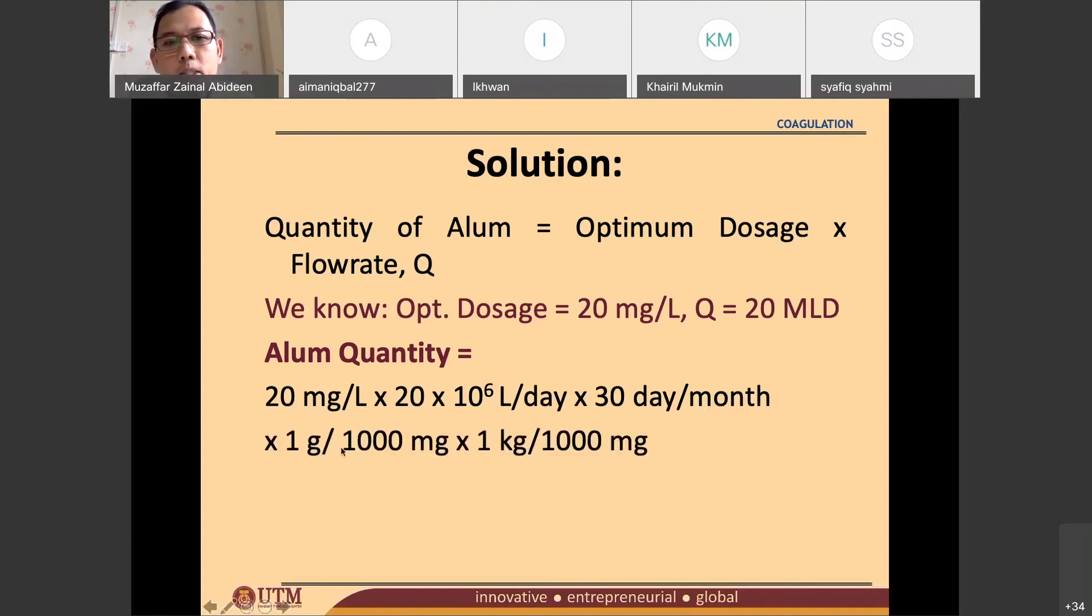1 g is equal to 1,000 mg and 1 kg is equal to 1,000 g. It's not supposed to be minigram. This is supposed to be gram. Please delete this M. A careless mistake here. If you are writing this down, please delete this M. It should not be M there. It should be G. Okay, try to get the answer.